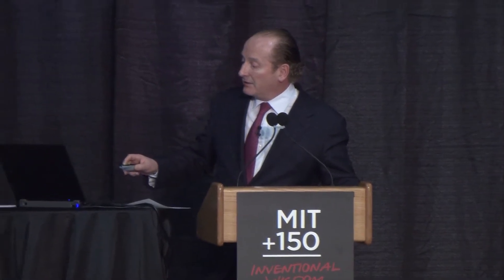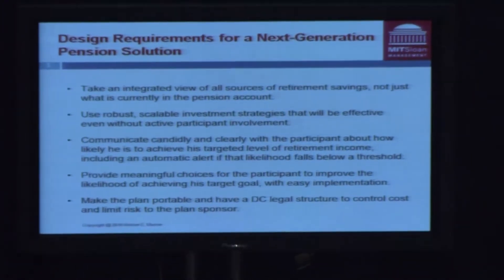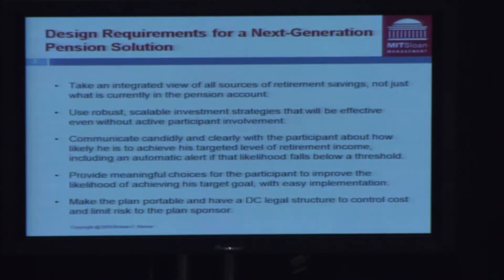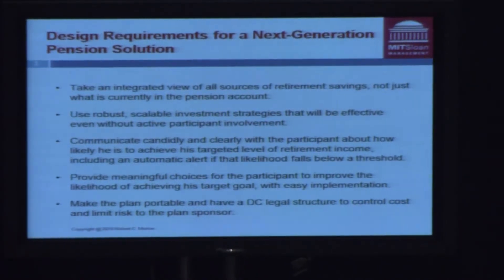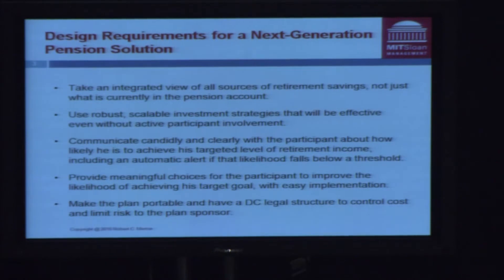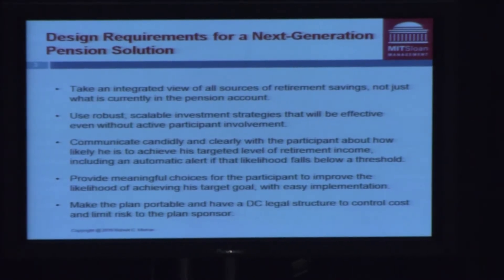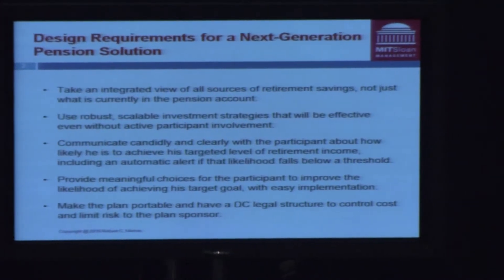I've listed a few things you would want in the REST design. It has to be an integrated solution, which means it uses your Social Security and all other sources of retirement, because it doesn't do any good to optimize on one thing. It has to be robust, which means the individual may never make a choice and it has to still work. That's a tricky design criterion, because you have to make something that works for people who won't even answer an email. It has to communicate clearly the meaning of choices. But it also has to fit the constraint that the sponsor has limited risk.